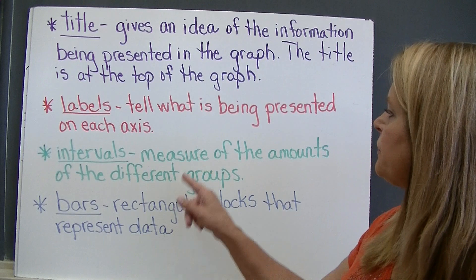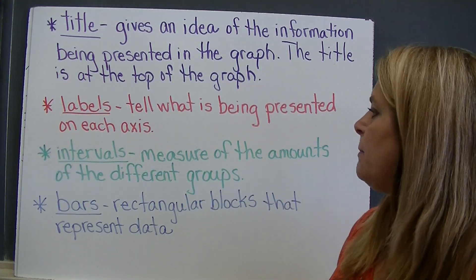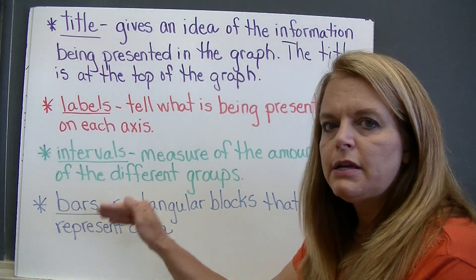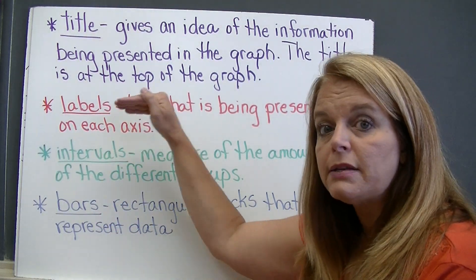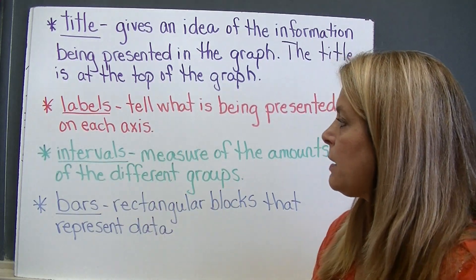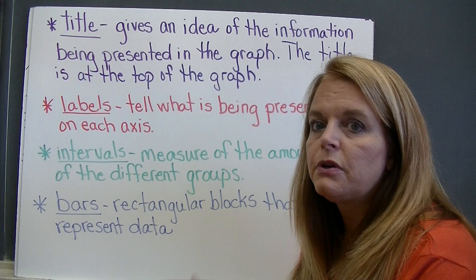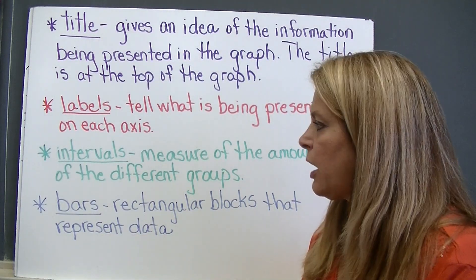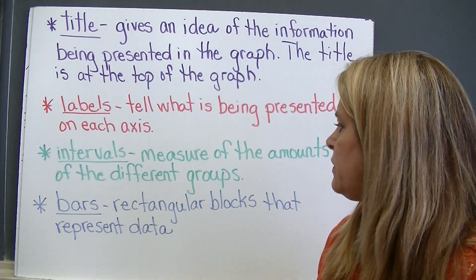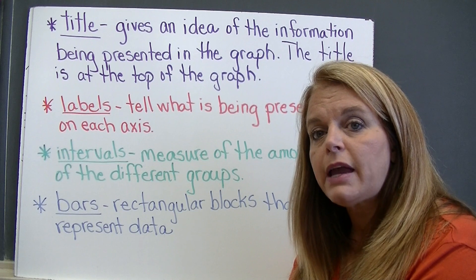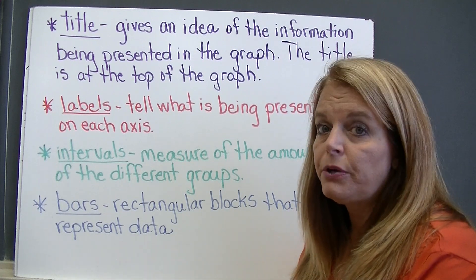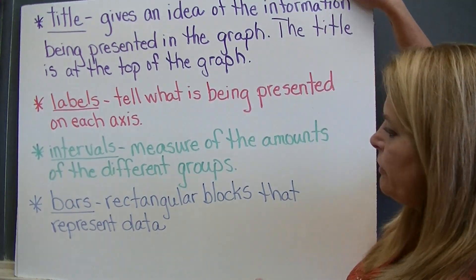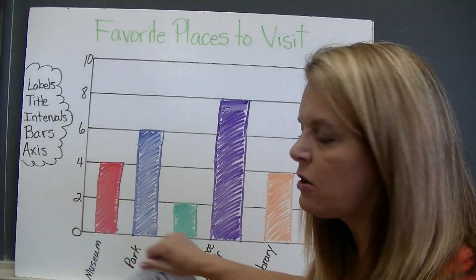Next, intervals. An interval is the measure of the amounts of the different groups. This is what's on one of the axes and it tells you how much each space counts for. We're going to look at one in a minute so that may make more sense. It's simply the measure of the amount of the different groups that you've put information about on your bar graph. And then finally, the bars themselves — they're rectangular blocks that represent the data that's been collected and put on the graph. So let's look at a bar graph and find all these parts.